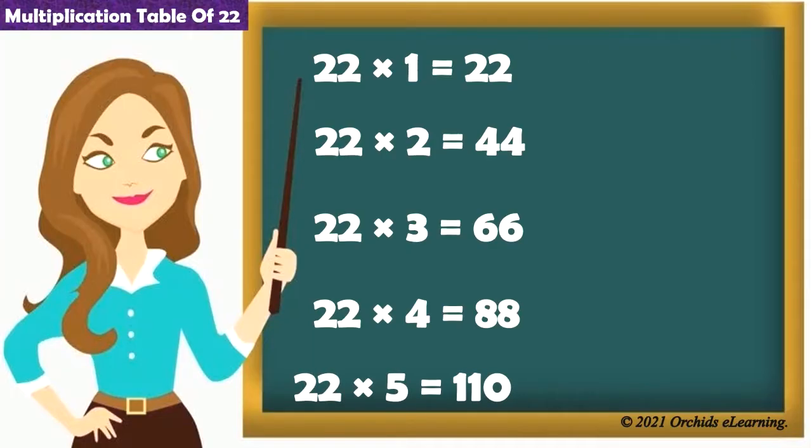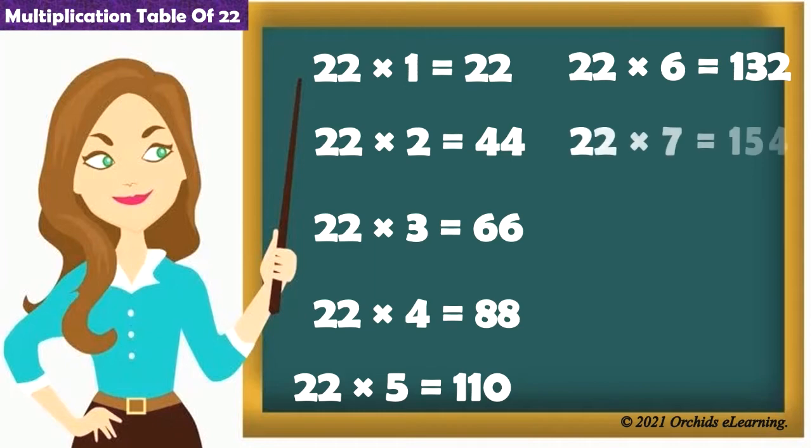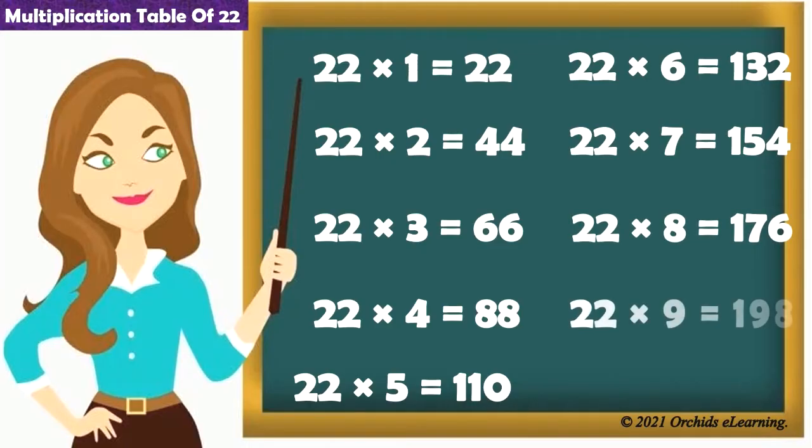22 6s are 132. 22 7s are 154. 22 8s are 176. 22 9s are 198. 22 10s are 220.